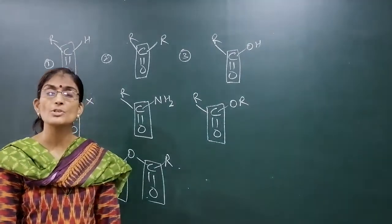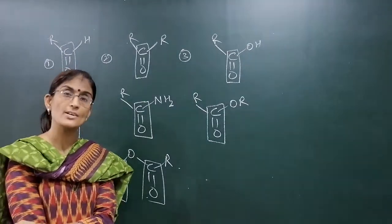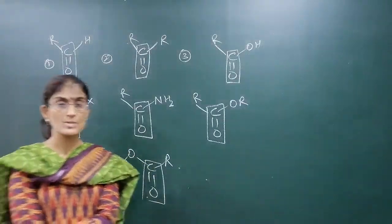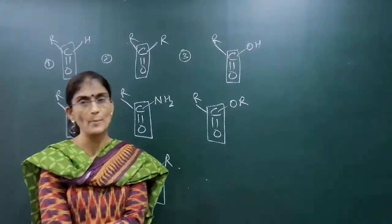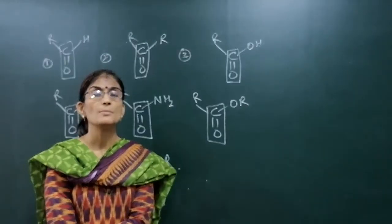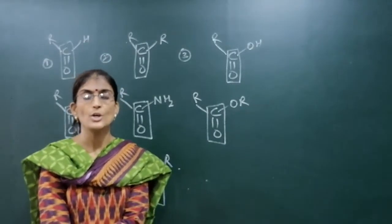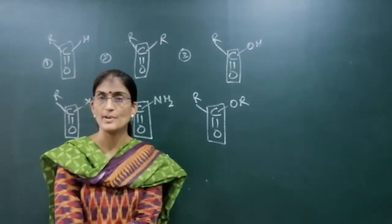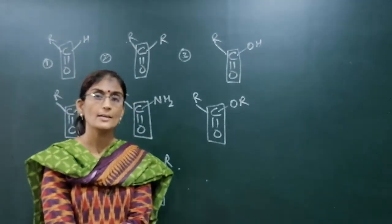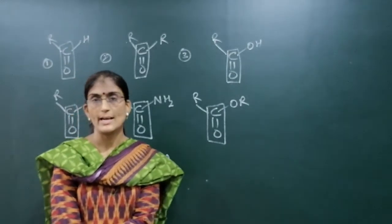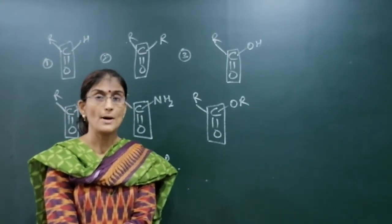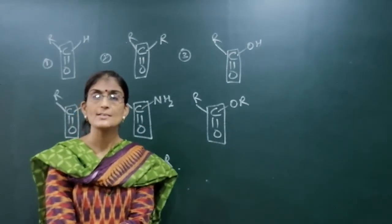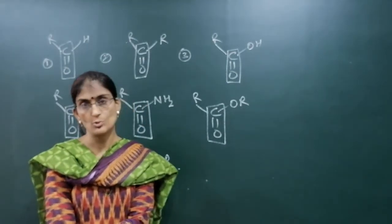So these carbonyl compounds — aldehydes and ketones first, then carboxylic acids, covering nomenclature, preparations, and reactions — are what we have to study in this chapter. In total, three carbonyl compound classes: aldehydes, ketones, and carboxylic acids. The compounds containing the carbonyl group — the C=O group — are known as carbonyl compounds.